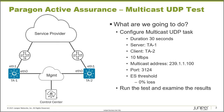For the specifics of the test: duration is 30 seconds, server is TA1, client is TA2, we'll send 10 megabits per second of multicast traffic, the multicast address is 239.1.1.100, the port is 3214, and for the error seconds threshold we're setting 0% loss — so if there is any loss, the test will fail.